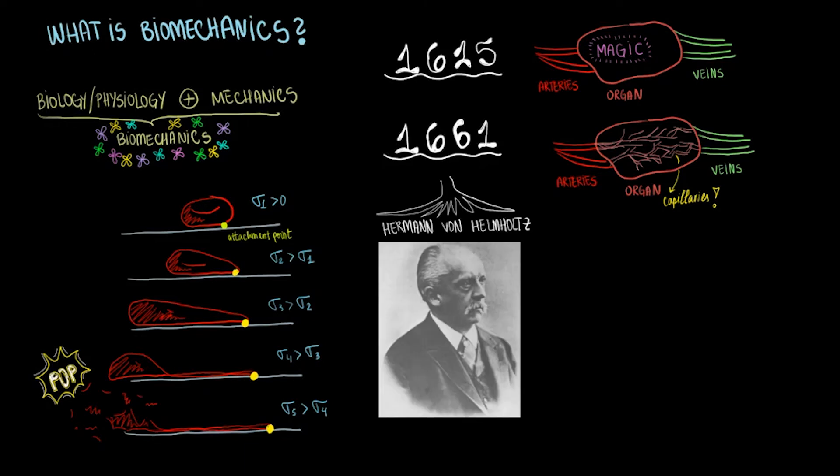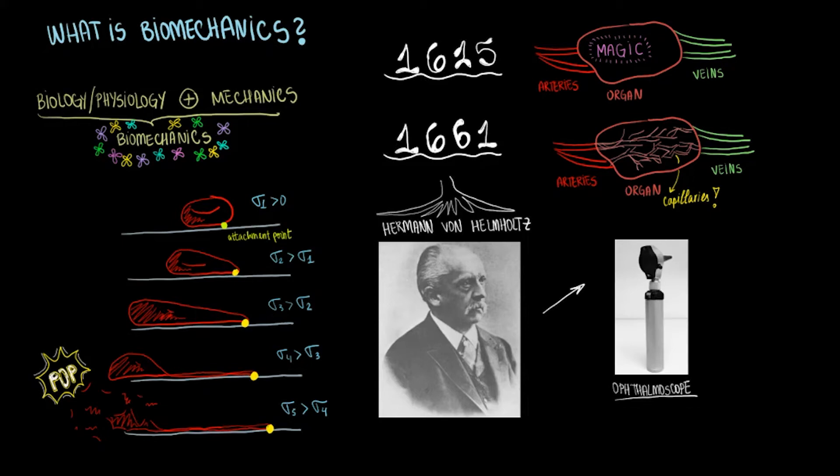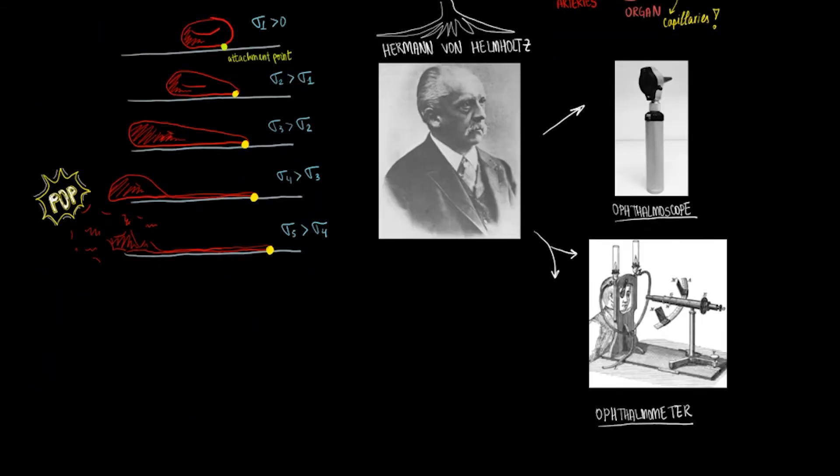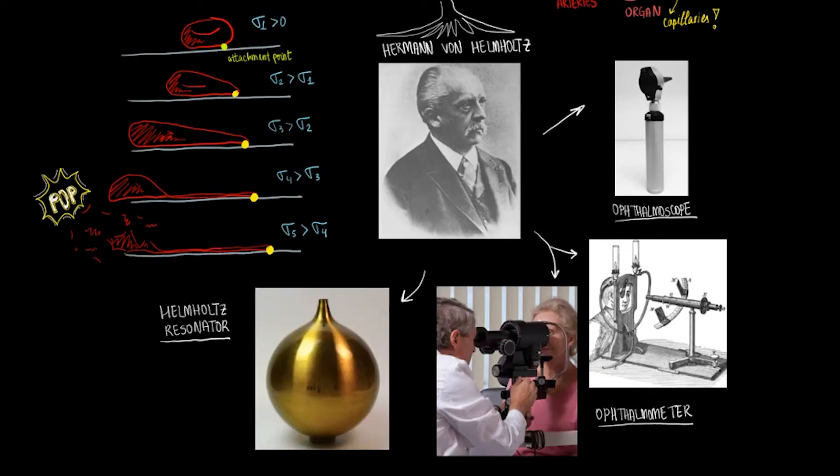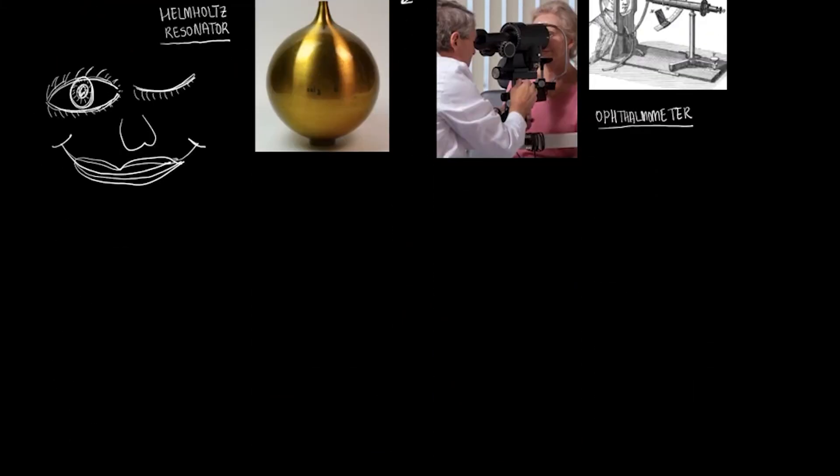Back in the 1870s, he invented the ophthalmoscope to better study the retina, the ophthalmometer to measure the curvature of the cornea, and the Hermann von Helmholtz resonator to study the hearing mechanism and many more. So basically a lot of tools you see when you go get your eyes checked. Yet for that he's considered by many the father of bioengineering.